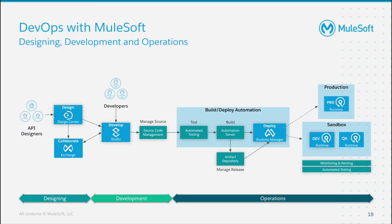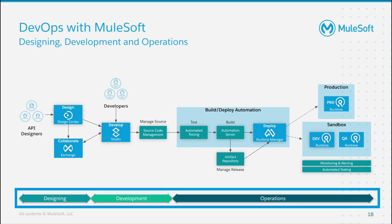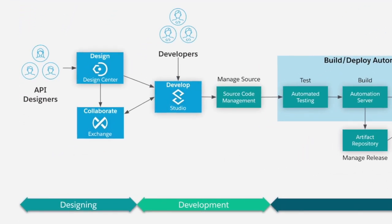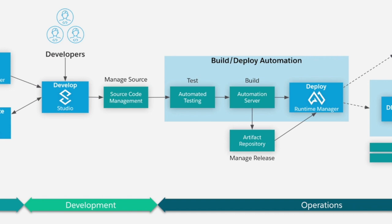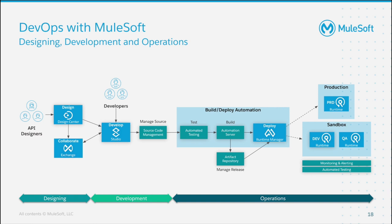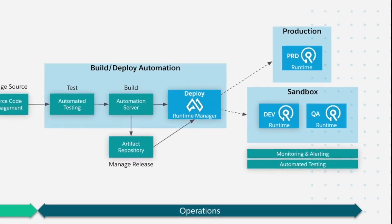This is very important — you can see the roles at the bottom of the page: designing, development, and operations. On the left you see API designers and developers, and you see how MuleSoft products help you — Design Center, Exchange, and Anypoint Studio for development. Then you have the actual automation: source code management to manage your source code, automated testing which you can do with MUnit, an automation server to build (for example Maven), and then you store that package in the artifact repository. You can use Artifactory to manage those releases, then use that stored package to deploy via Runtime Manager to your different environments — whether sandbox or production.